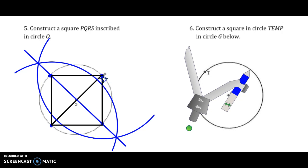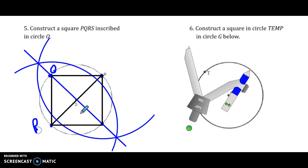You have the construction, you just didn't finish. You also need to remember to label. So we have P, Q, R, and S. Don't forget to label — labeling is important.